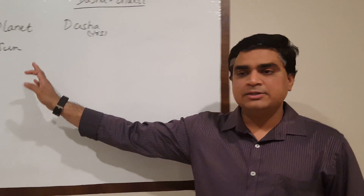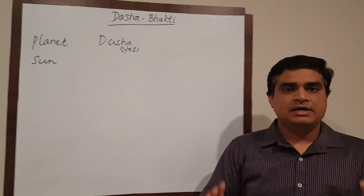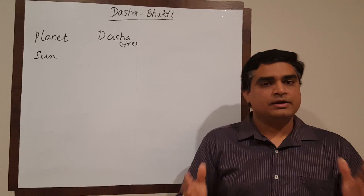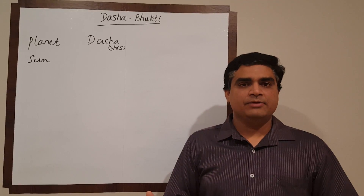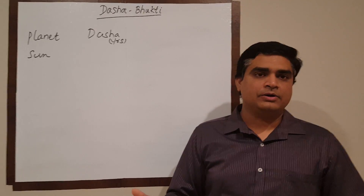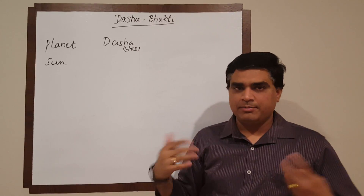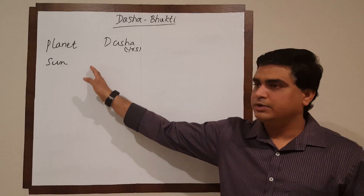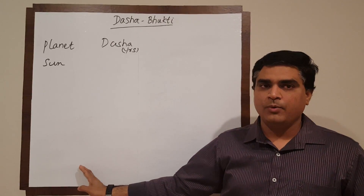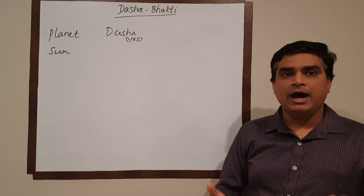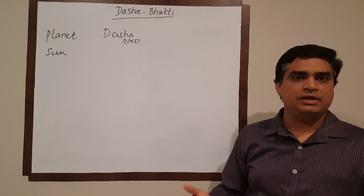Let's hop right onto the whiteboard. In our previous classes we discussed that each planet will have their specific influence on each individual's horoscope or life for a certain period of time — that is exactly what we call a Dasha, also known as the major period. For recap, I'm going to dedicate the left side of my whiteboard for the Dasha, and on the right side I'll show you how to calculate the span for the Bhukti or Antra Dasha — the sub period.